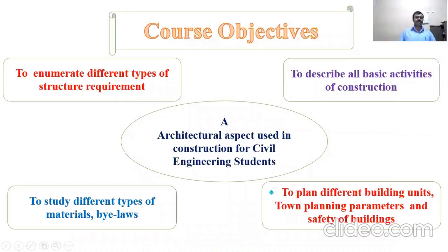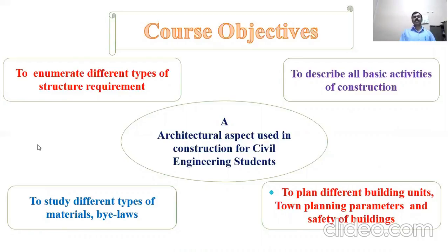The objectives of this subject are: to learn about different types of structural requirements; to describe all the basic activities of construction; to study different types of materials and building bylaws; to plan different building units; to understand town planning parameters and safety of building; and to understand architectural aspects used in construction for a civil engineering student.